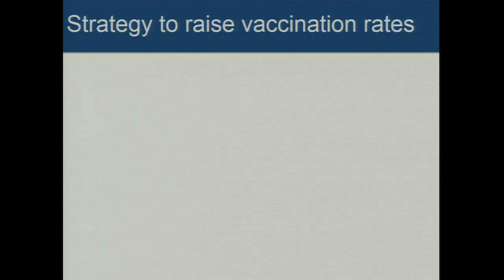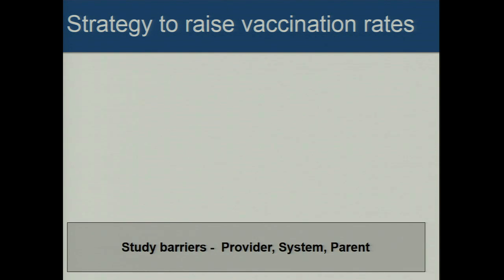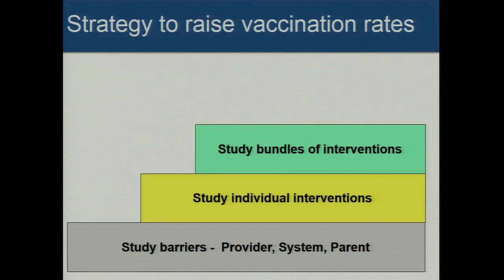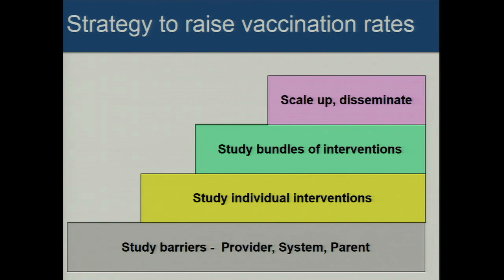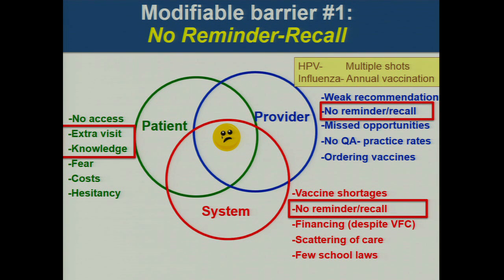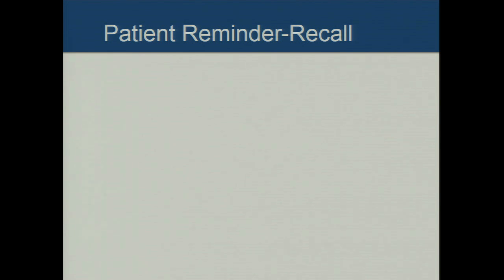The general strategy my group has used to raise vaccination rates is: first study barriers, then study individual interventions, then study bundles of interventions if individual interventions have small effects, then figure out how to scale up and disseminate. I think this process might be useful for other diseases like obesity, mental health, or asthma. One barrier appearing across patient, provider, and system levels is no reminder recall. Some patients need extra visits, they don't know about vaccines, providers weren't doing reminder recall, and systems weren't doing it either.